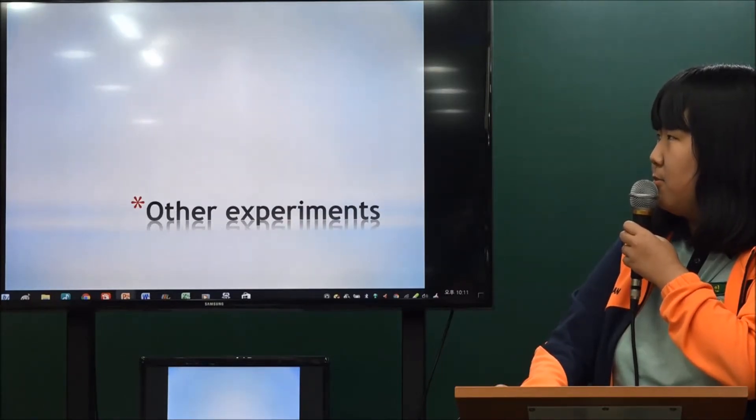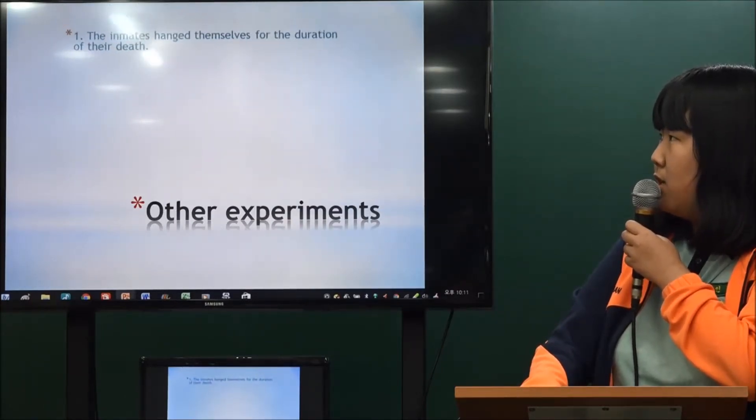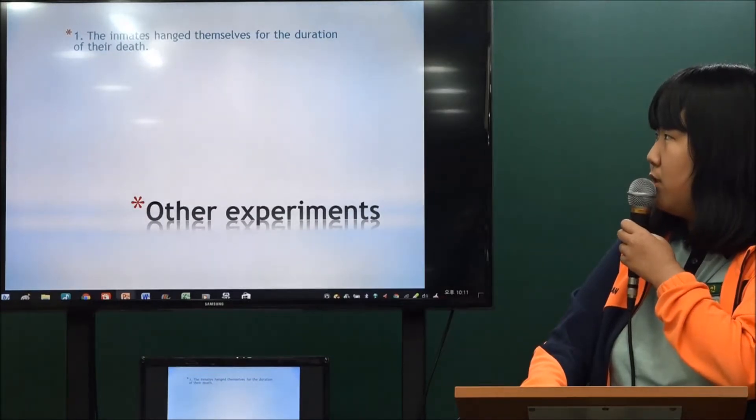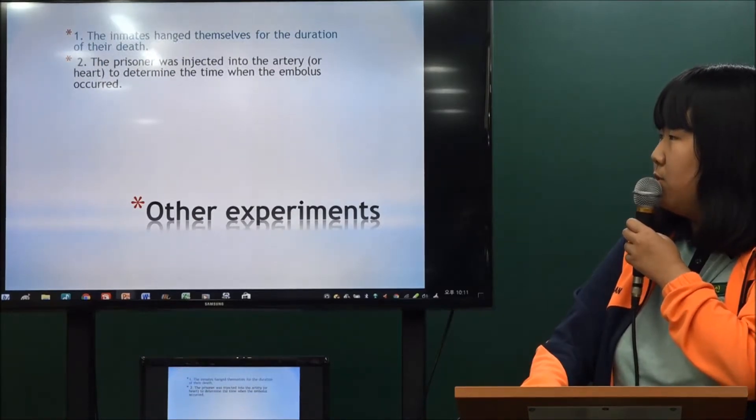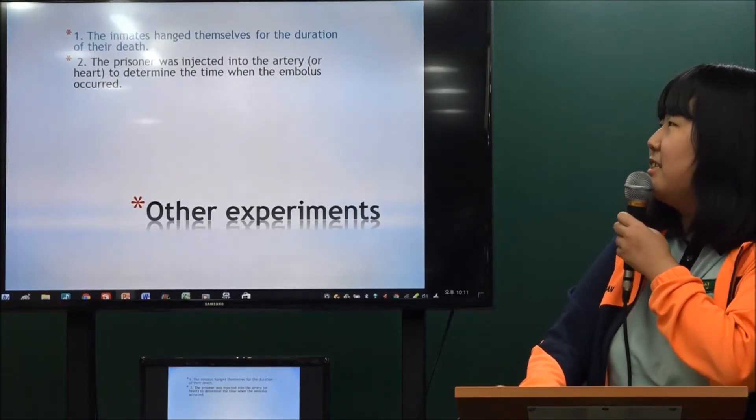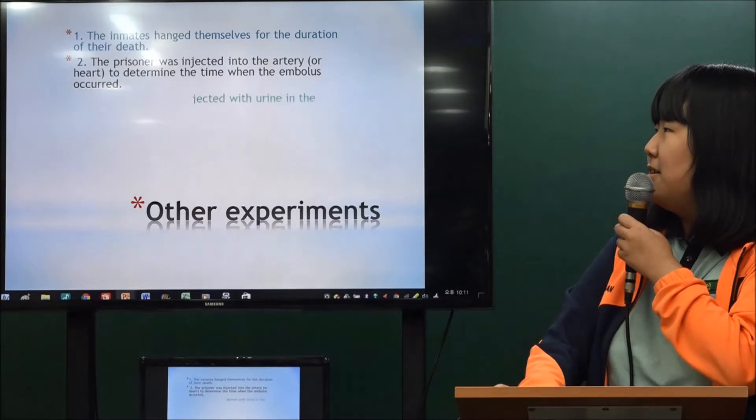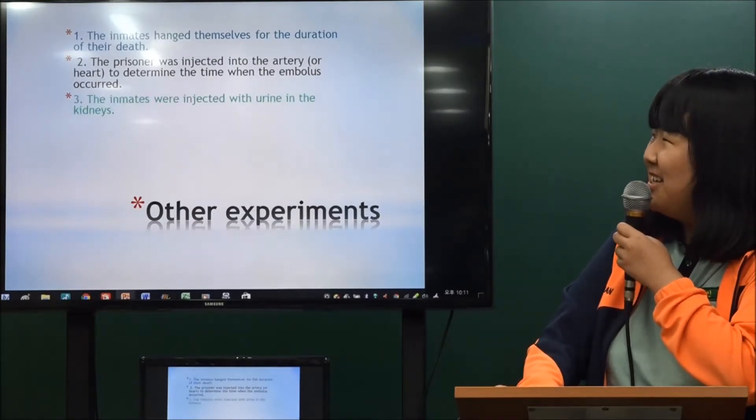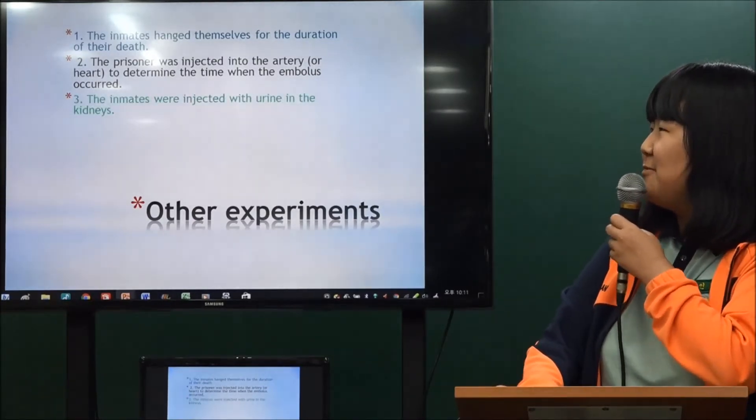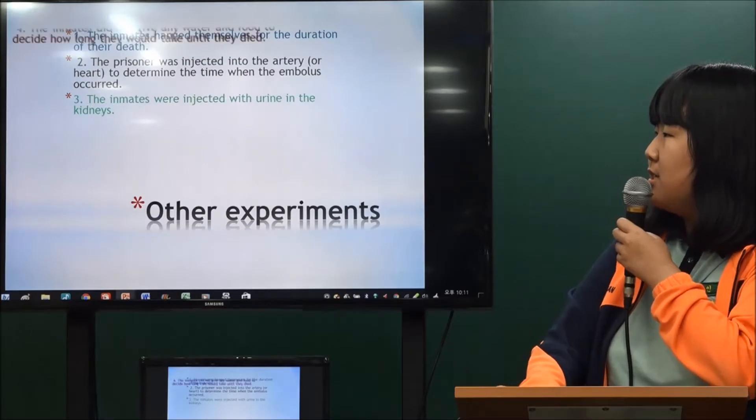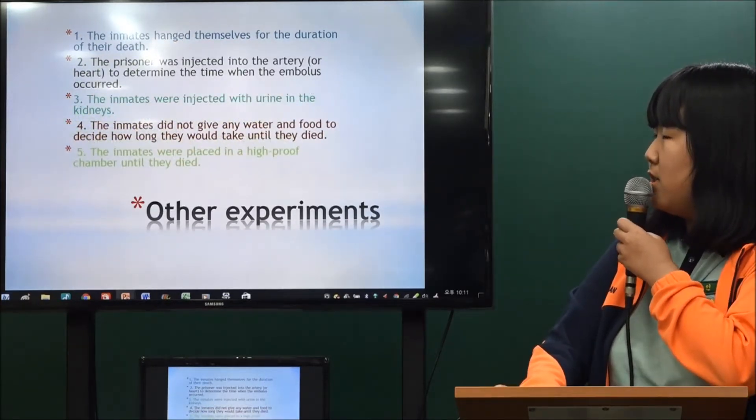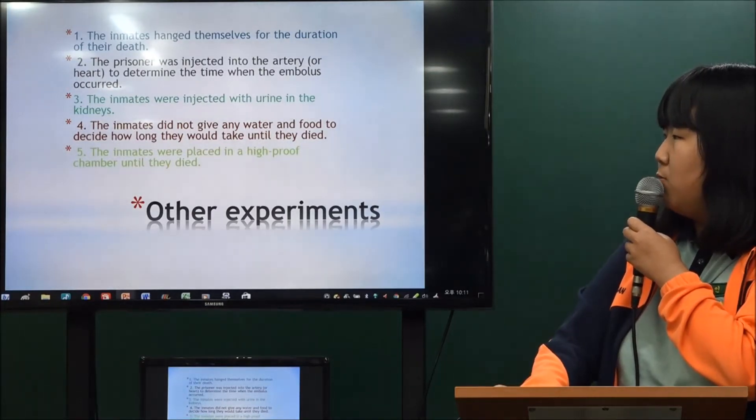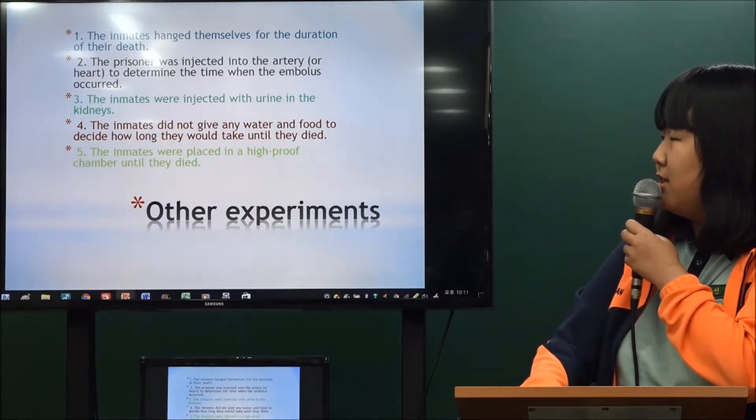Other experiments included: inmates were hanged to measure the duration until death. Prisoners were injected with urine into the kidneys. Inmates were not given any water or food to measure how long until they died.